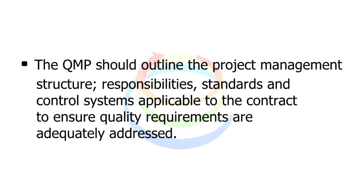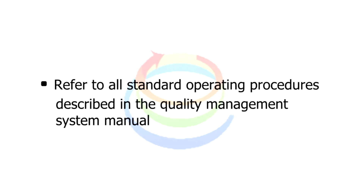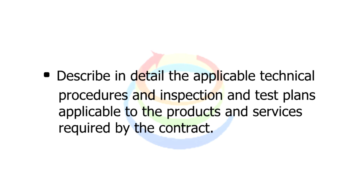The QMP should outline the project management structure, responsibilities, standards, and control systems applicable to the contract to ensure quality requirements are adequately addressed. Refer to all standard operating procedures described in the quality management system manual. Describe in detail the applicable technical procedures and inspection and test plans applicable to the products and services required by the contract.